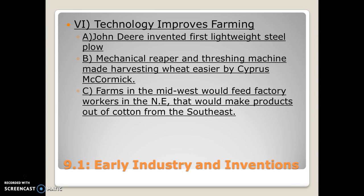Because of both the steamboat and the telegraph, the United States could move items, people, and messages quicker, making our large nation seem much smaller, which allowed many more improvements to occur. For example, John Deere invented the first lightweight steel plow. Prior to this, the plow was heavy cast iron and very difficult for an ox, horse, or person to push. Because the new plow was lightweight steel, you could do more work using less energy — if you could only plow about one acre a day before, now you could do two to three.